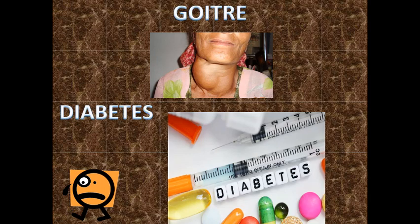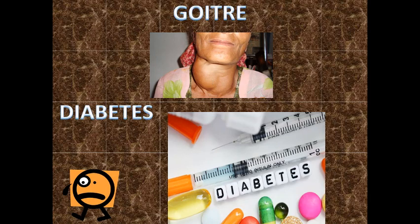Now let us study two important diseases caused by the deficiency of secretion from these endocrine glands. The first disease is goiter — known in Hindi as 'ghingarrog' — caused by the deficiency of the hormone thyroxine, which is released by the thyroid gland situated in the neck region. For proper secretion of thyroxine, a person should take an iodine-rich diet.